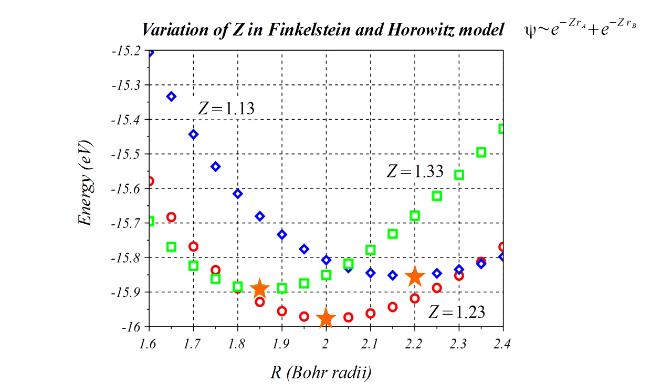As we might expect, larger z values correspond to a smaller molecule. The best z and r values are those which give the absolute minimum energy. We find, as did Finkelstein and Horowitz, optimum values z equals 1.23 and r equals 2. This r is equal to the experimentally determined value.